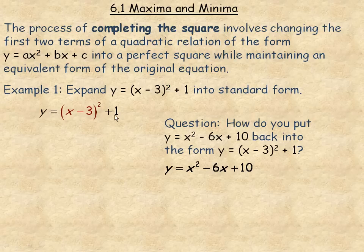We are going to take our original quadratic and expand the x minus 3 squared. If you remember the shortcut for expanding a perfect square: x squared, then x times negative 3 is negative 3x doubled is negative 6x, and then negative 3 squared is 9.